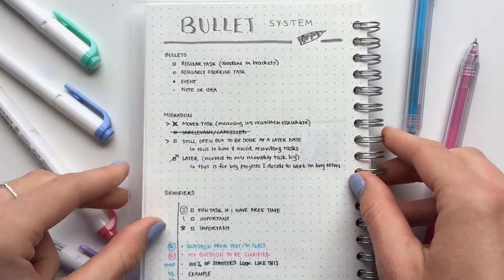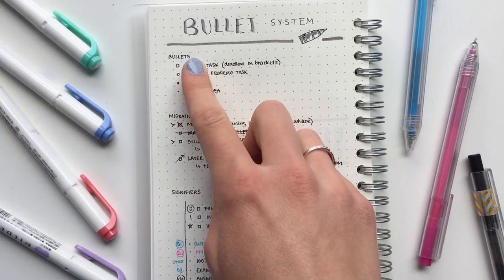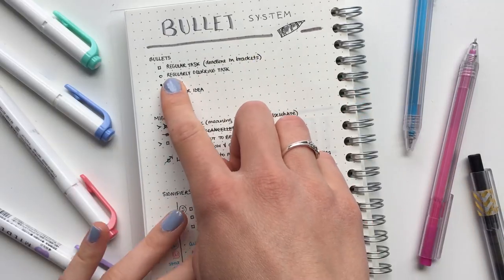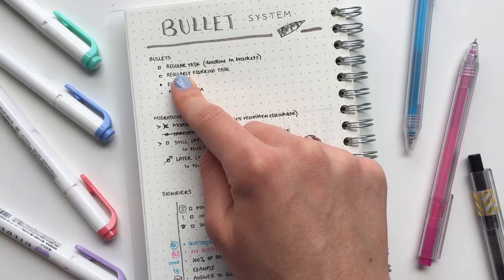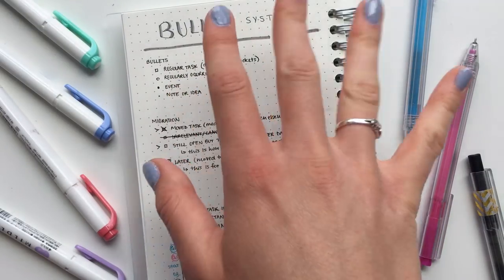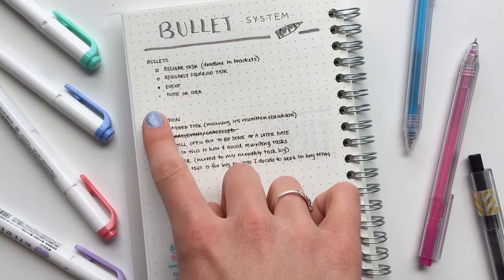So let's get right into it. When it comes to bullets, I have four different types of bullets. This is for a regular task, and I'll write the deadline in brackets. This one is for a regularly occurring task. So if I want to work out or cook or bake, something like that, I'll put it with an open circle.